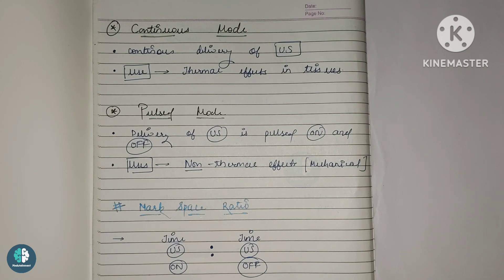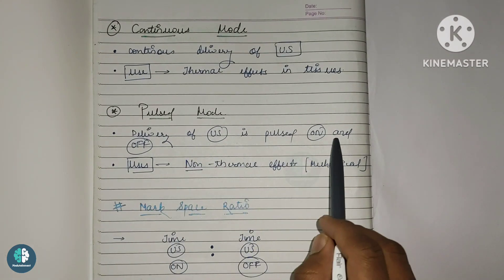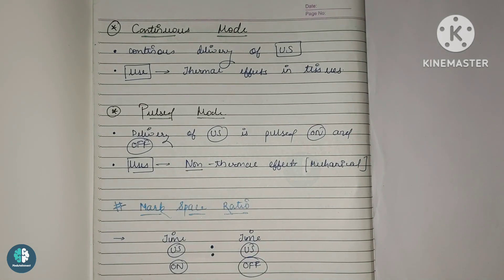Next is the pulsed mode. Pulsed mode of applying the ultrasound is very much beneficial because it has both on time and off time. Pulsed mode is the delivery of US when the pulse is on as well as off. In continuous mode there is no break in between, no off time. But in pulsed mode we have on and off time. Delivering US in pulsed on-and-off mode is called pulsed mode. Pulsed mode is used to achieve the non-thermal effects or mechanical effects in the body — such as cavitation, acoustic streaming, and so on.